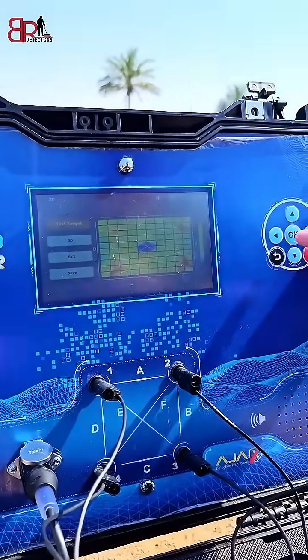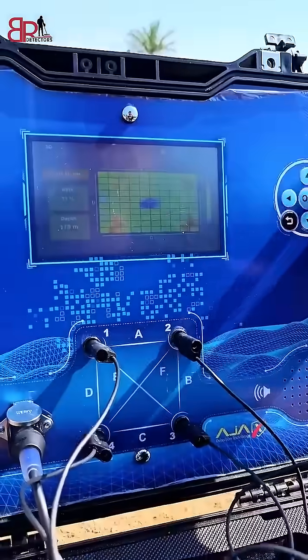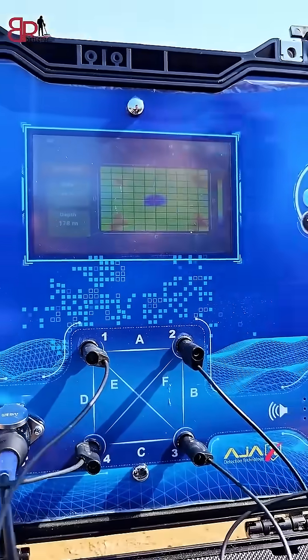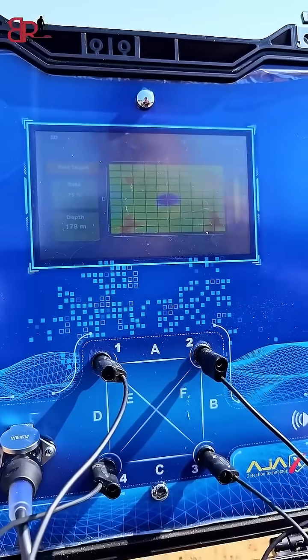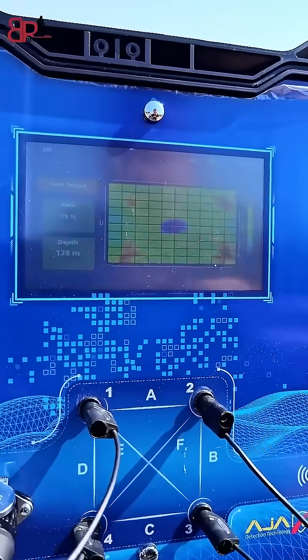We can now test and check the target. We will move the cursor to the point of the borehole. The device tells us that the weight of the water is 75% and the depth is 178 meters underground.